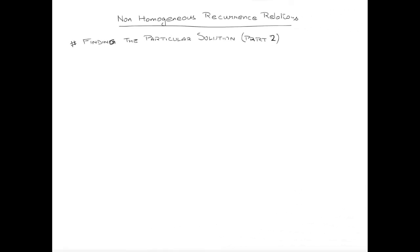Hello everyone. This video is a sequel to the previous video. In this video we will learn how to find a particular solution depending upon the function F(n). Consider a linear non-homogeneous recurrence relation with constant coefficients c0, c1, c2, ..., ck, where c0 is not equal to 0 and ck is also not equal to 0.